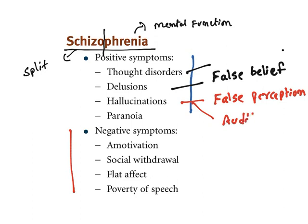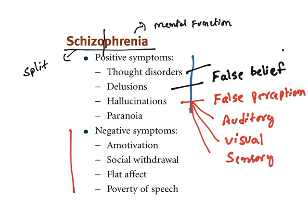Hallucinations can be classified as auditory — even though nothing is there, they start hearing voices. Visual hallucination means they perceive or see certain things. Sensory hallucinations involve feeling that some animal is coming towards them or something is creeping on their body. Paranoia is another form of positive symptom.